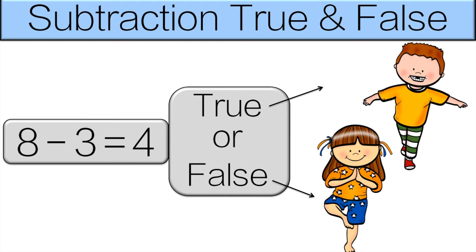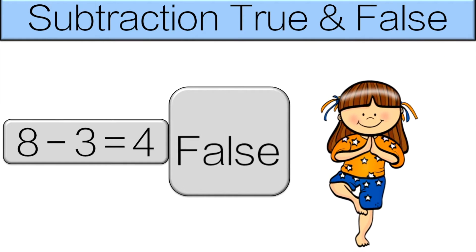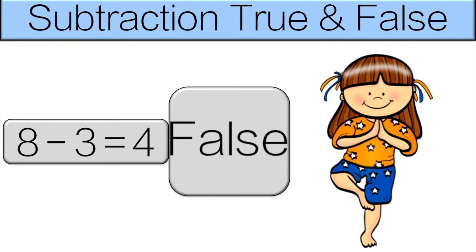So again, we'll start by looking at the equation. 8 minus 3 equals 4. Is that true or false? It is false. 8 minus 3 is 5. So do the tree pose for 10 seconds.